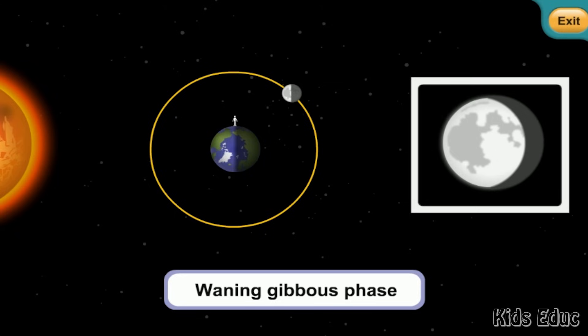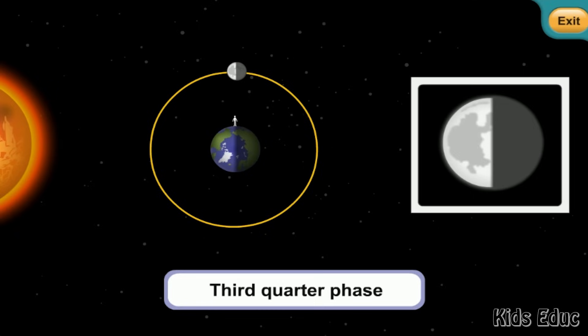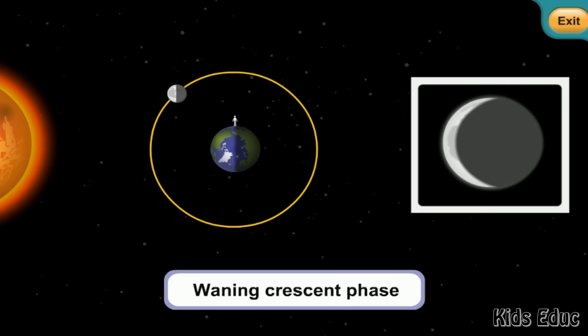But it's not. In the third quarter phase, the left half of the moon appears lit, and the right side of the moon appears dark. During the waning crescent phase, the moon looks like a crescent. This moon signals the beginning of a new cycle, and means that you will see the new moon in a few days.